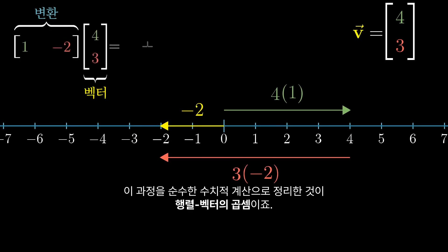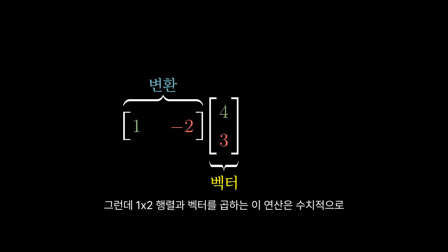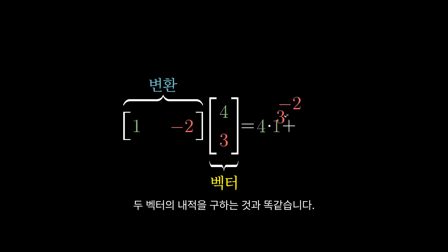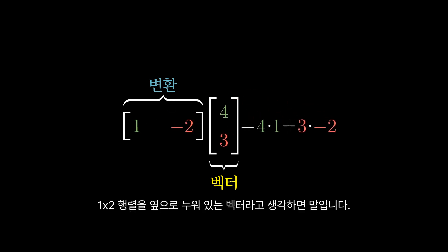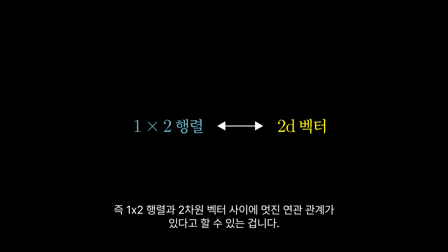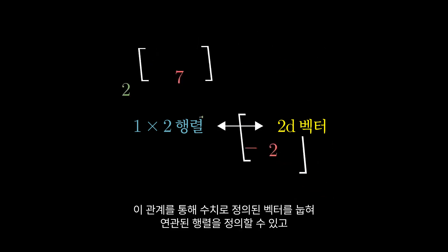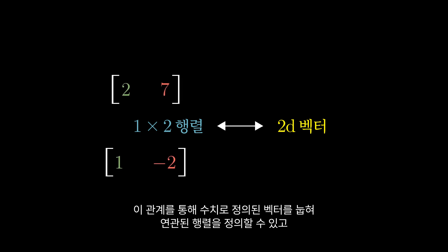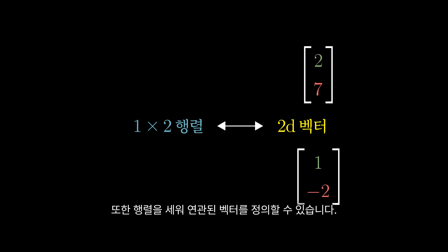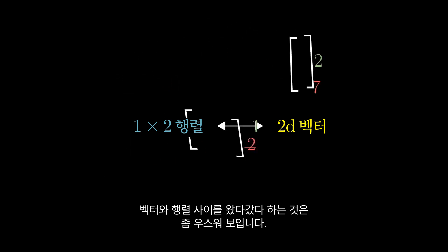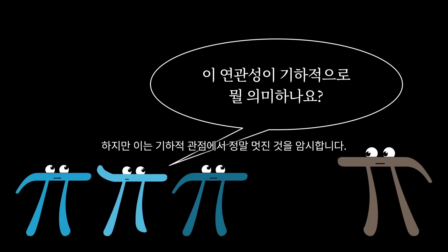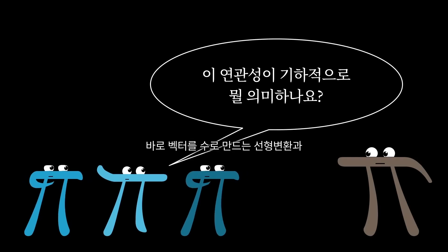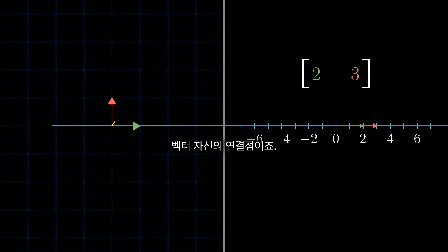When you do this calculation purely numerically, it's matrix-vector multiplication. This numerical operation of multiplying a 1 by 2 matrix by a vector feels just like taking the dot product of two vectors. Doesn't that 1 by 2 matrix just look like a vector that we tipped on its side? In fact, we could say right now that there's a nice association between 1 by 2 matrices and 2D vectors, defined by tilting the numerical representation of a vector on its side to get the associated matrix, or tipping the matrix back up to get the associated vector. But this suggests something truly awesome from the geometric view: there's some kind of connection between linear transformations that take vectors to numbers and vectors themselves.